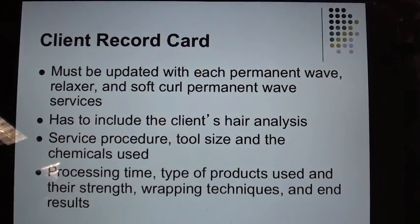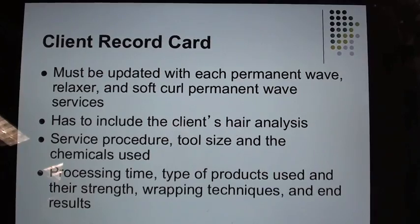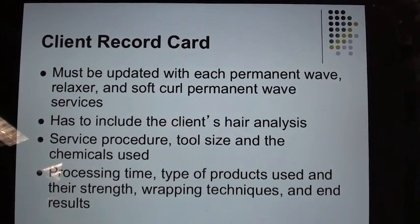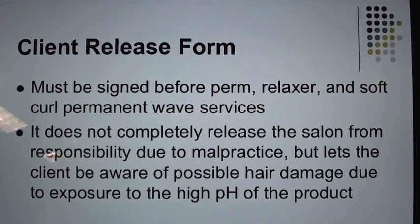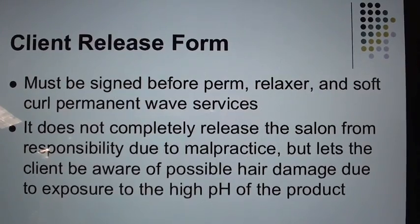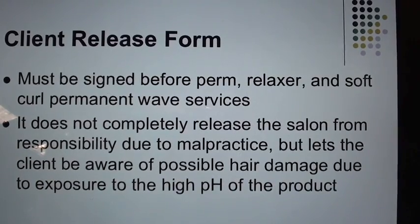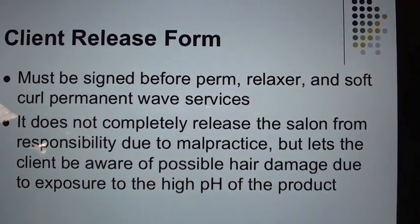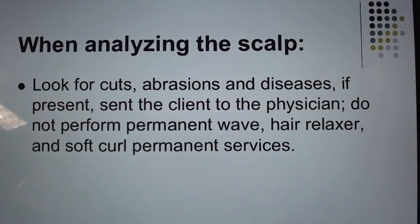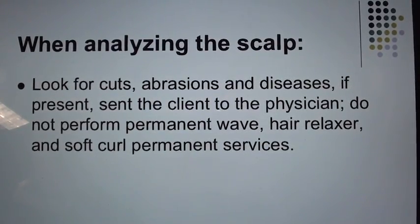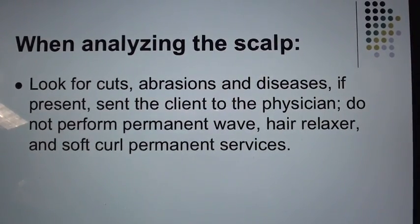The client record card must include the client's hair analysis, service procedure, tool size and chemicals used, processing time, type of products used and their strengths, wrapping techniques, and end results. A client release form must be signed before perm, relaxer, and soft curl permanent wave services. It does not completely release the salon from responsibility due to malpractice, but lets the client be aware of possible hair damage due to exposure to the high pH of the product. When analyzing the scalp, look for cuts, abrasions, and diseases; if present, send the client to a physician and do not perform services.